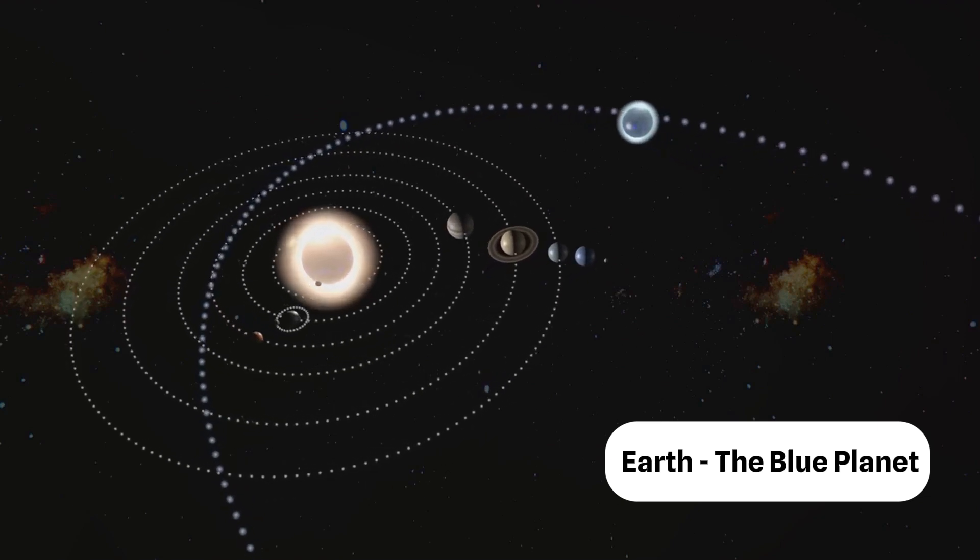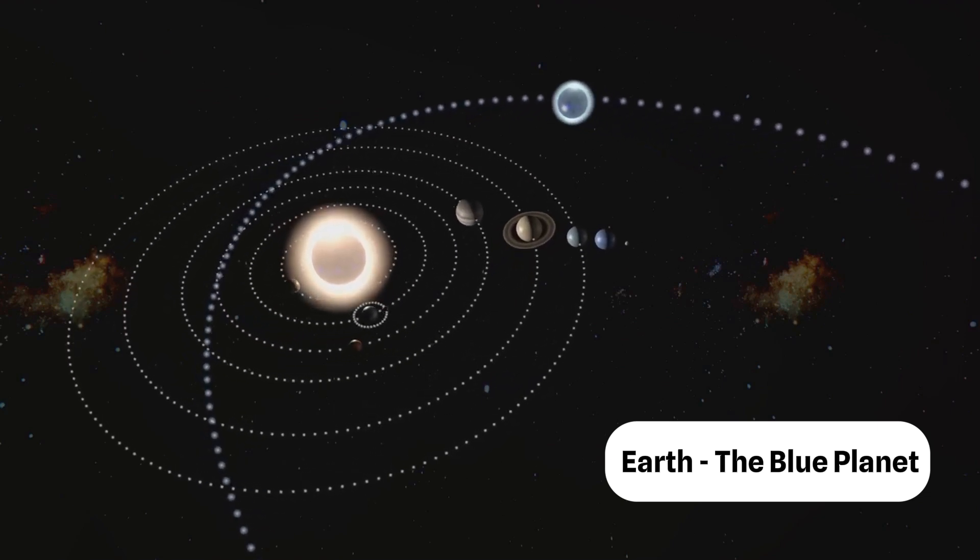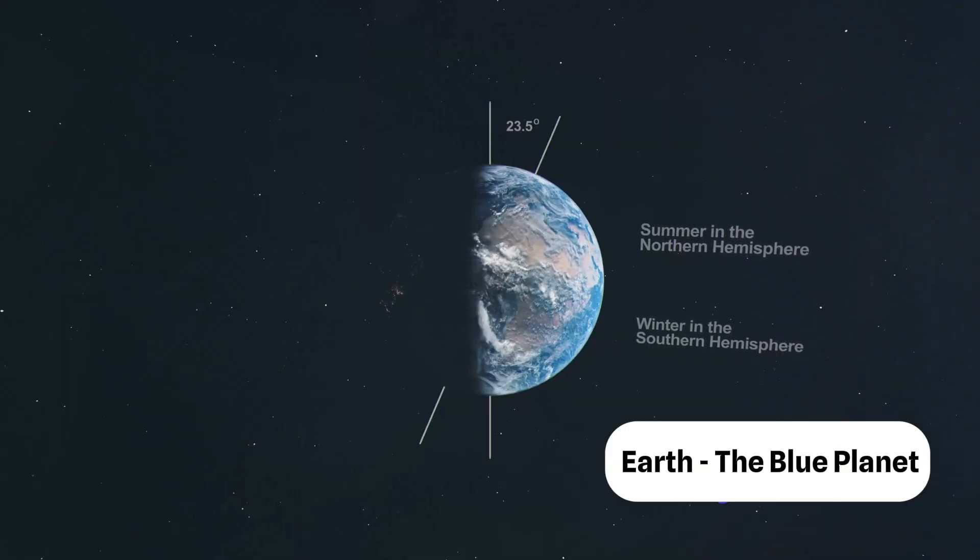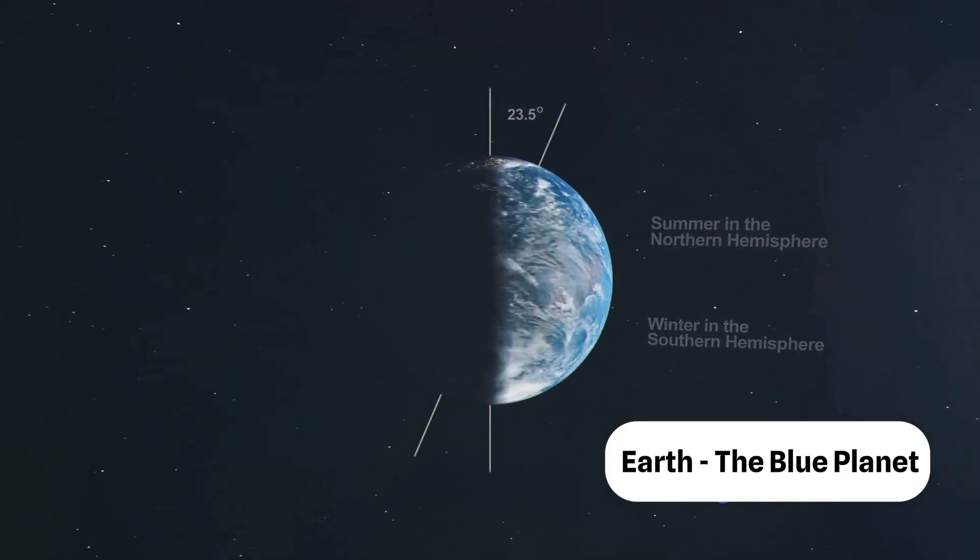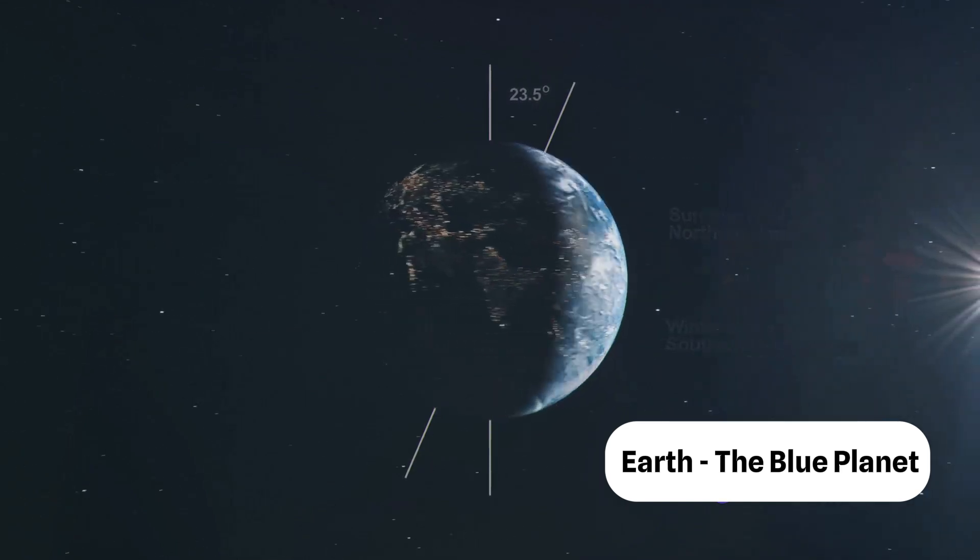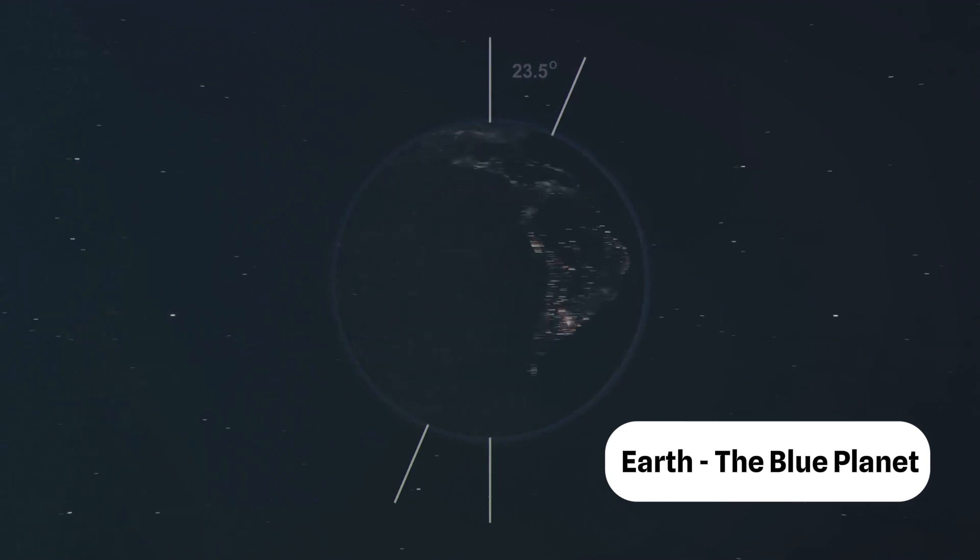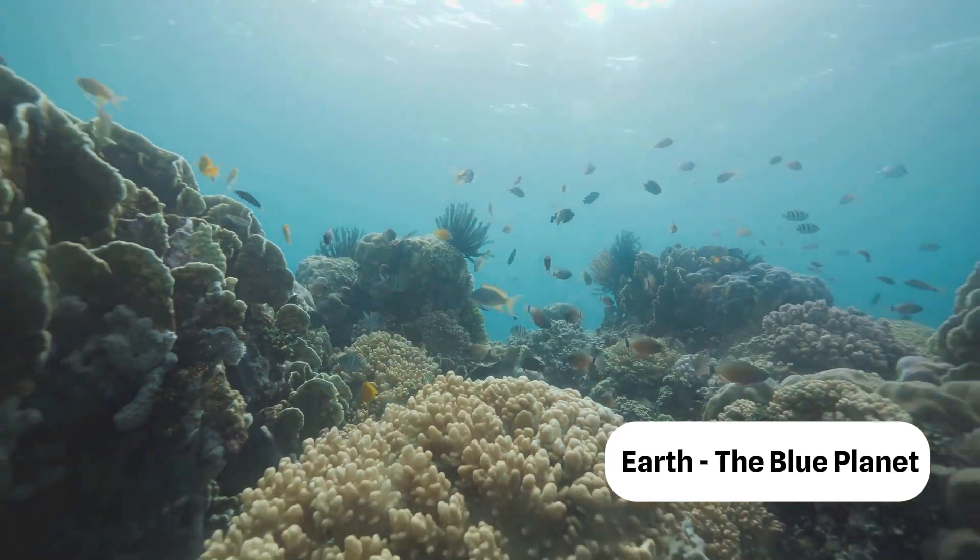Let's start with Earth's ability to support life. Earth is located in the Goldilocks zone, that sweet spot in any solar system where it's not too hot, not too cold, but just right for life as we know it. This perfect positioning allows liquid water to exist on the surface, a crucial ingredient for life.